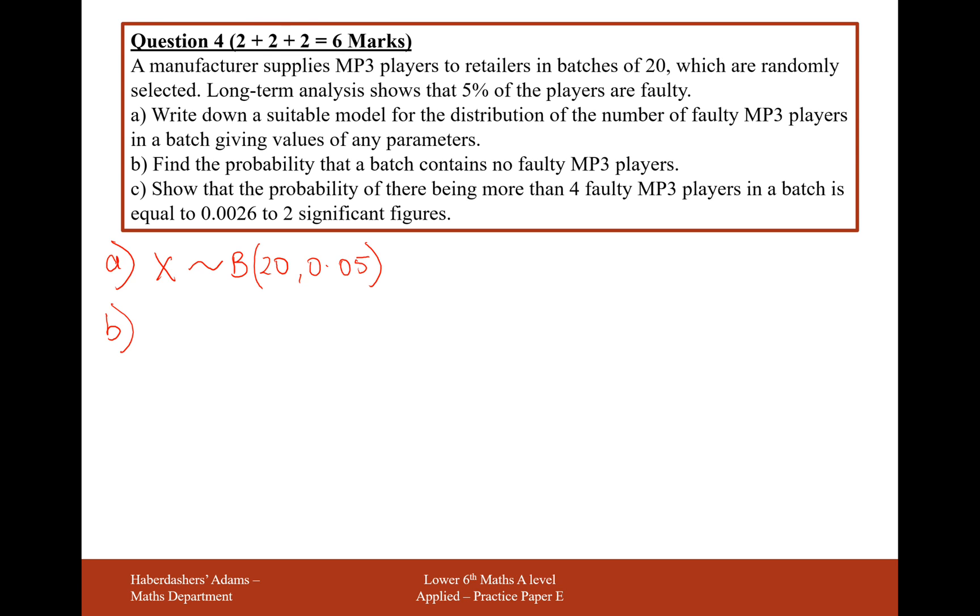Part B is find the probability that a batch contains no faulty MP3 players. In this case, we're looking for the probability where X is 0. With exact probabilities, we can use the probability formula. So it would be 20 choose 0, 0.05 to the power of 0, we don't want any failures, and 0.95, the probability of success, to the power of 20.